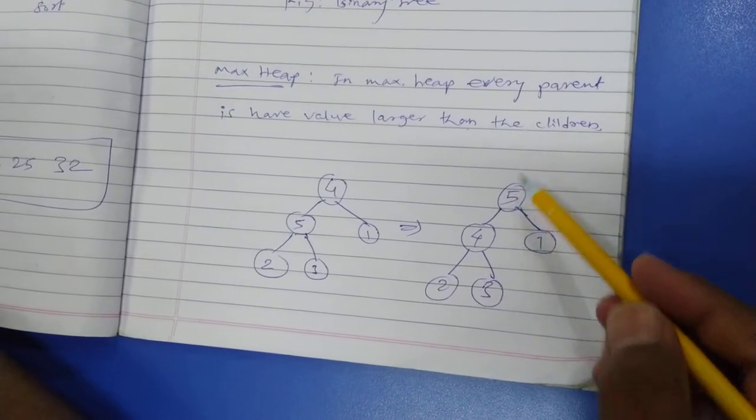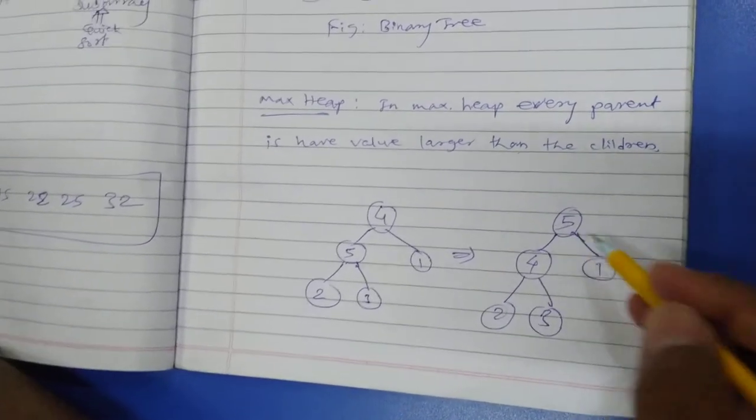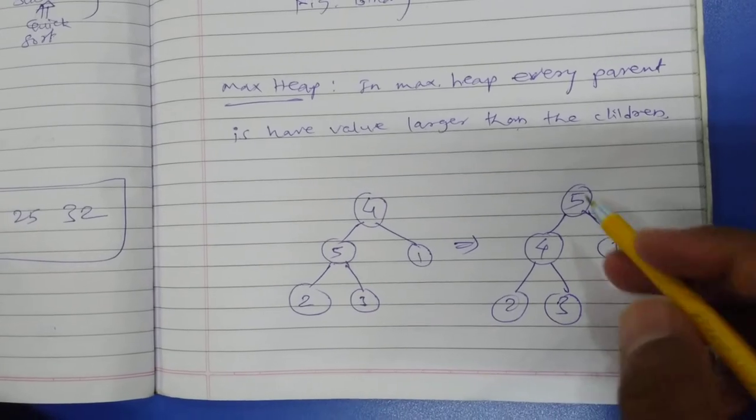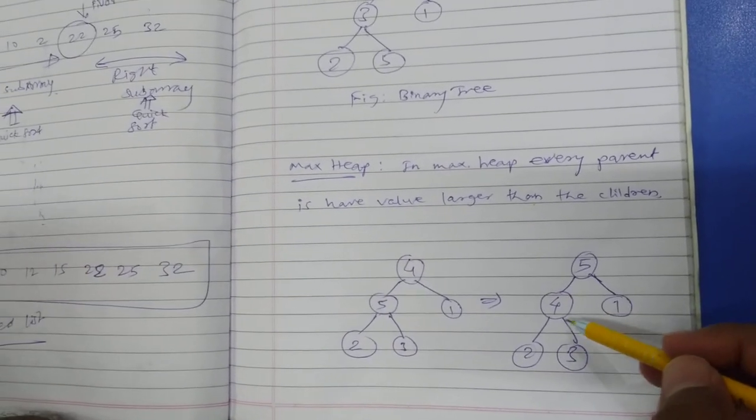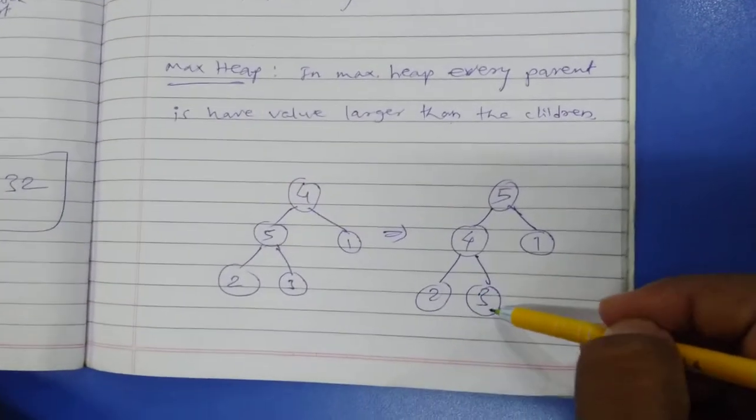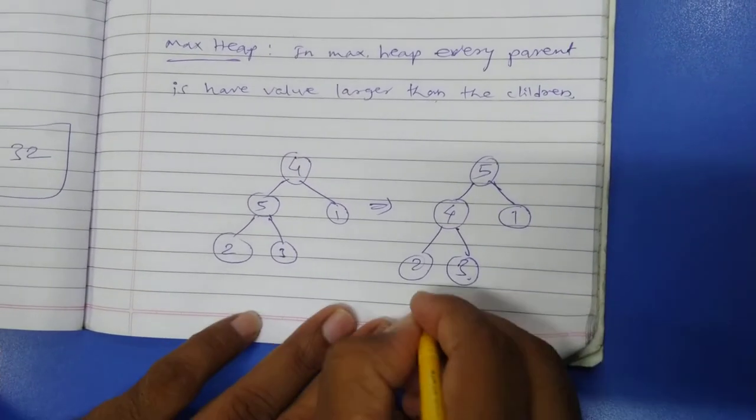Now if we check this diagram, is it a MaxHeap tree? What is the rule of MaxHeap? In MaxHeap, every parent node has the value larger than its children. So 5 is having the value larger than 4 and 3, so this can be a max heap.